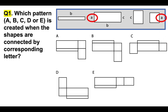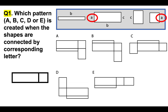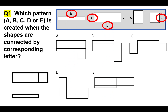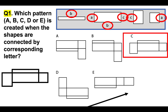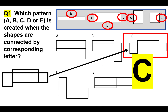If we connect the letter A's together, we get that shape on the left-hand side. Then if we connect the B's together, it will come up with that shape. And then finally, connect the C's together to get that shape. You will notice from the answer options that the correct answer, of course, is C.